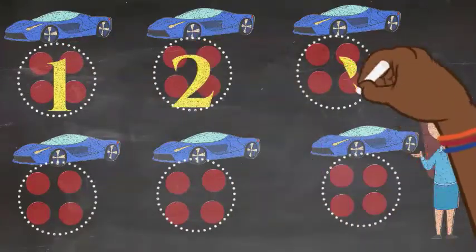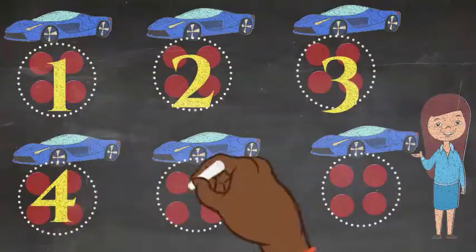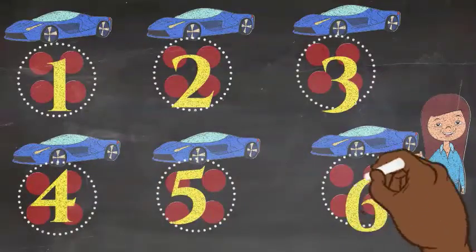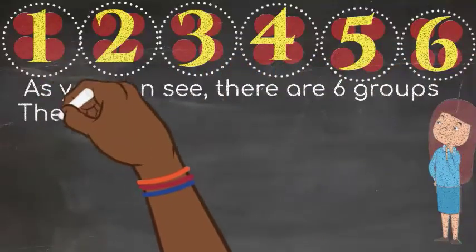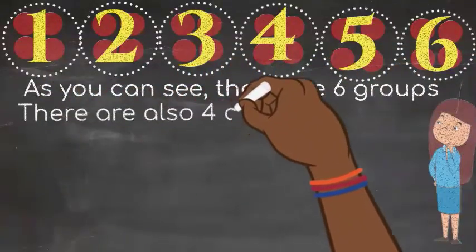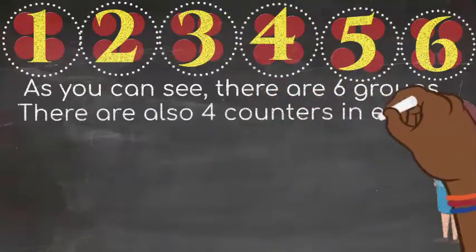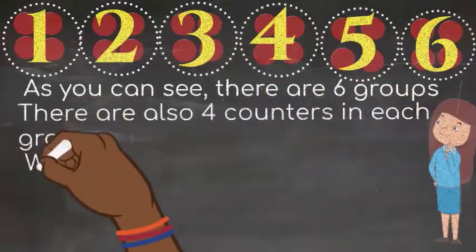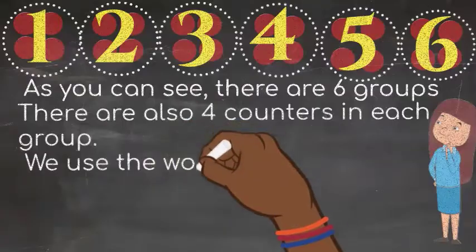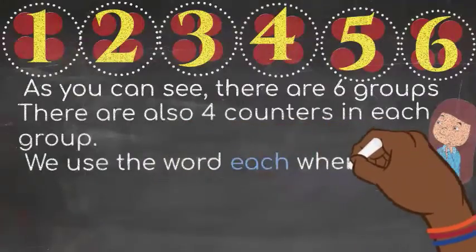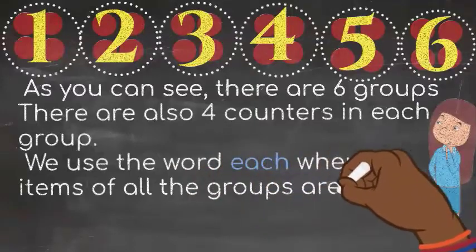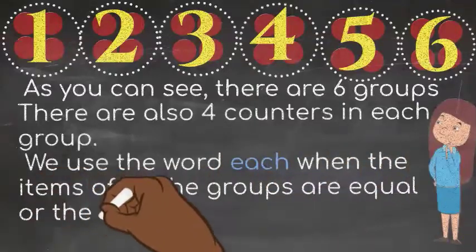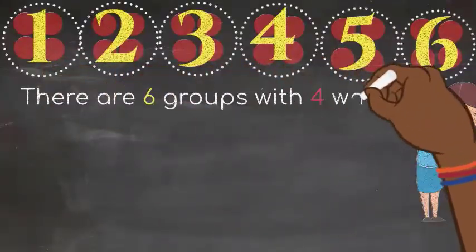Now I have a total of 6 groups. So as you can see, there are 6 groups. There are also 4 counters, or circles, in each group. We can use the word 'each' when the items of all the groups are equal or exactly the same. So there are 6 groups with 4 wheels in each group.